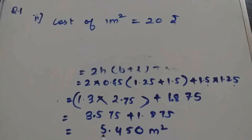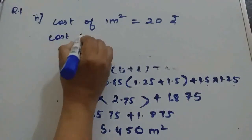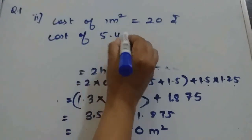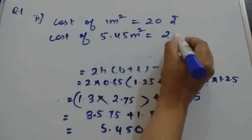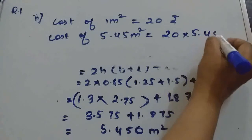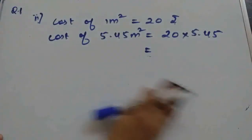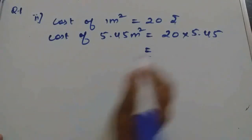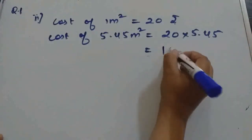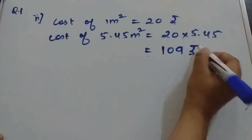But how much area did we get here? 5.45 square meters. So cost of 5.45 square meters will be 20 times 5.45. We will multiply by 20. The answer we will get is 109 rupees.